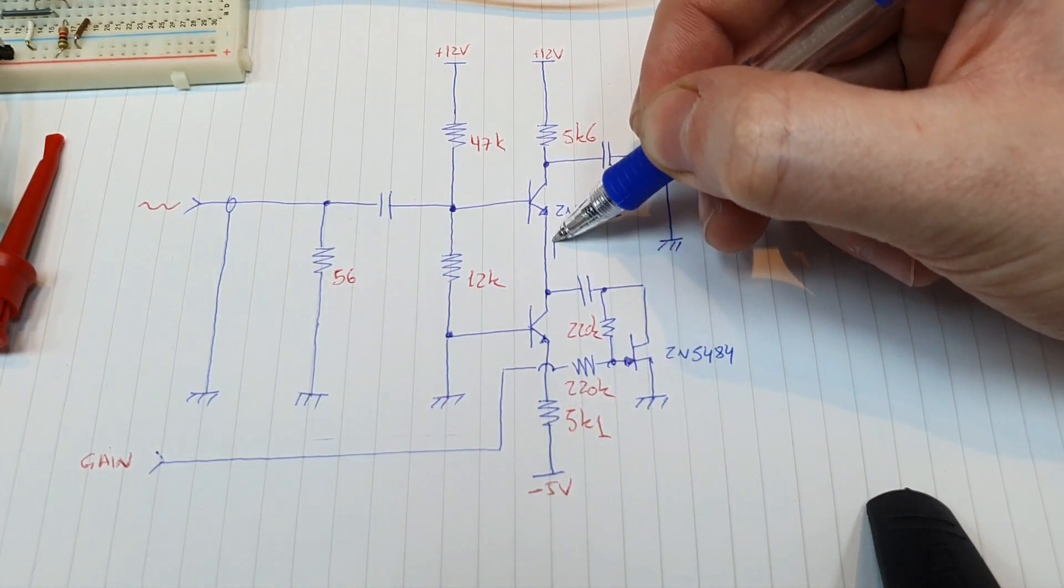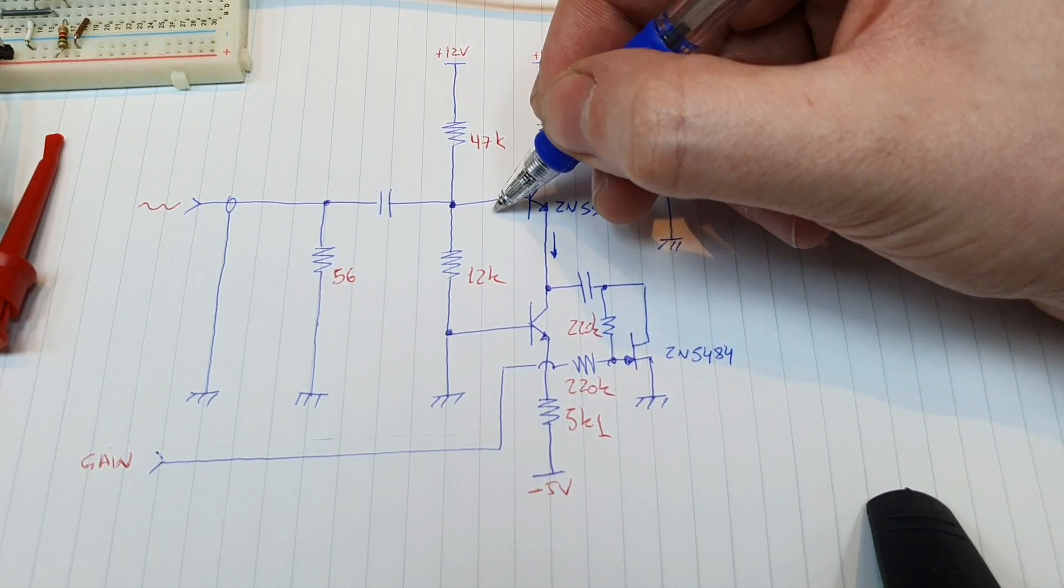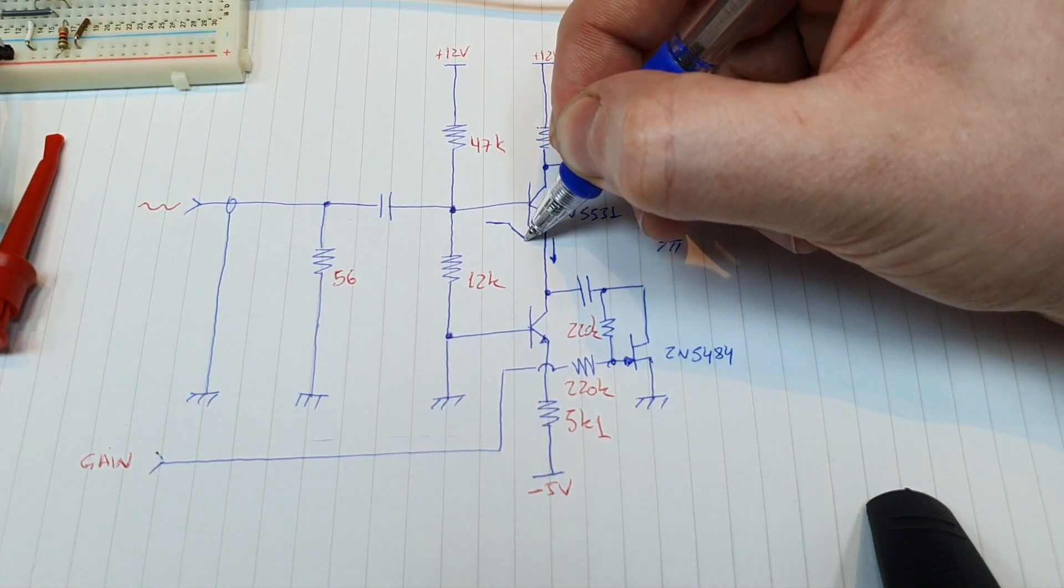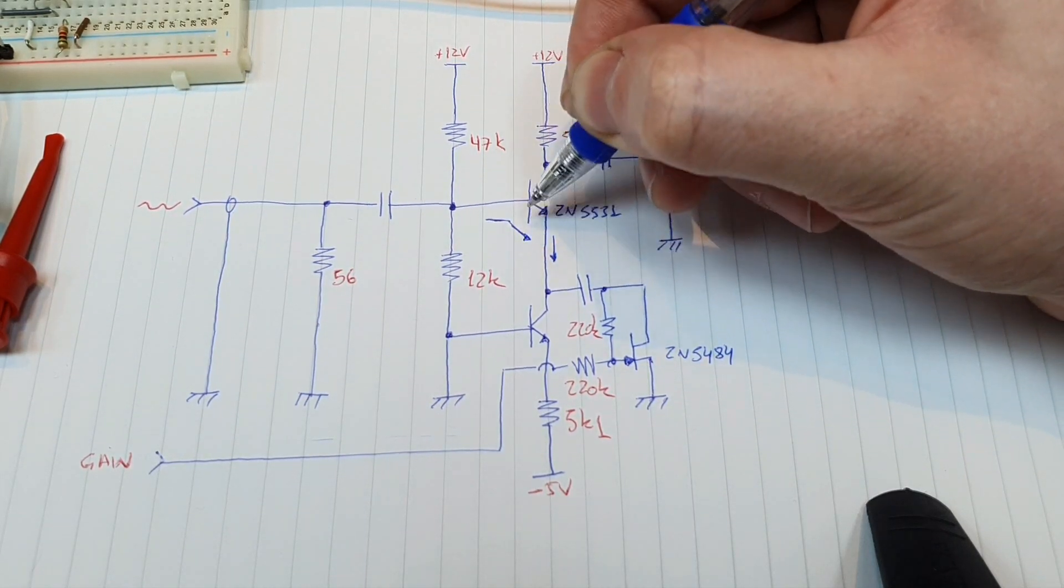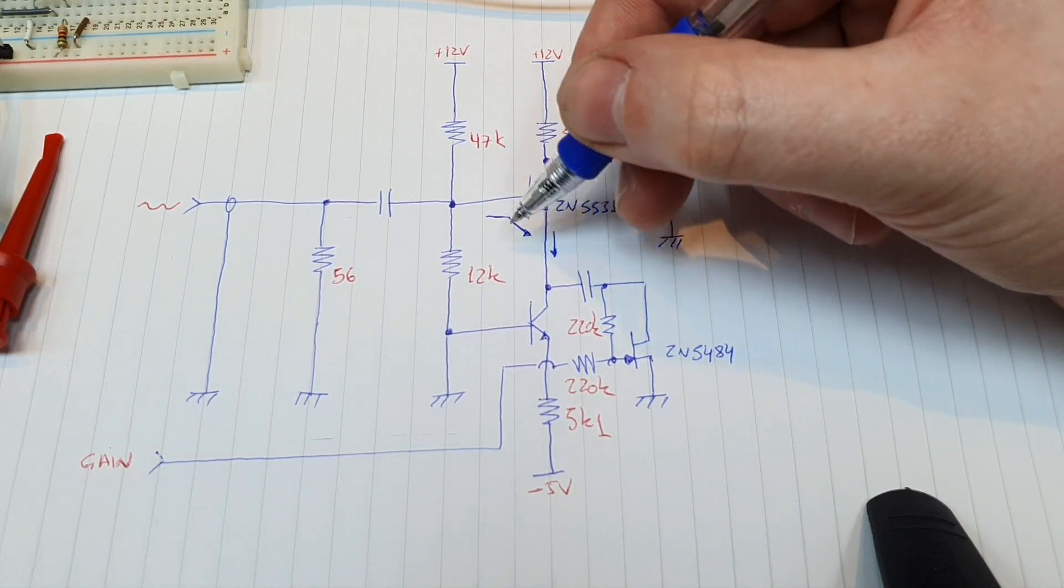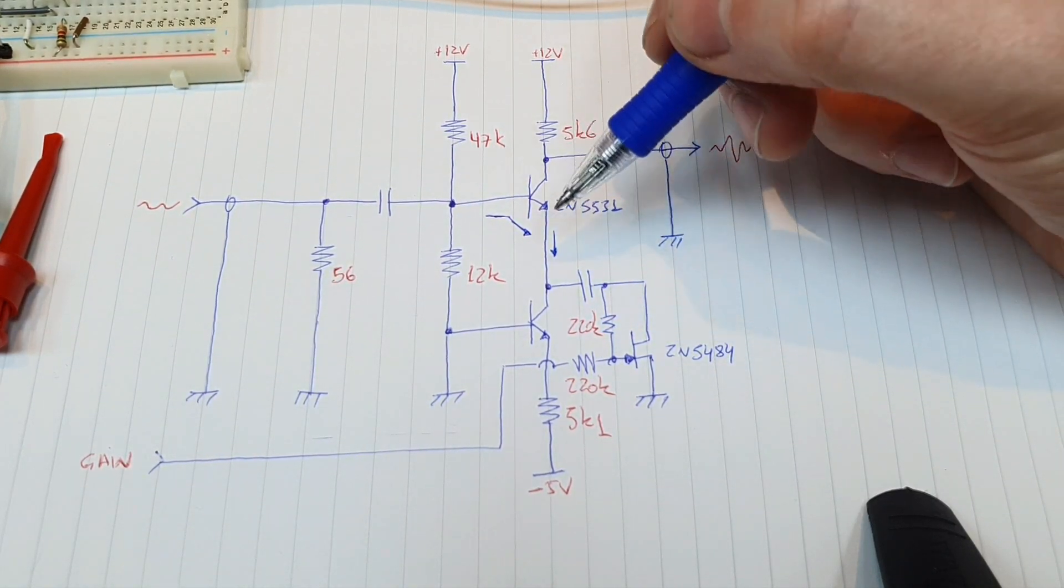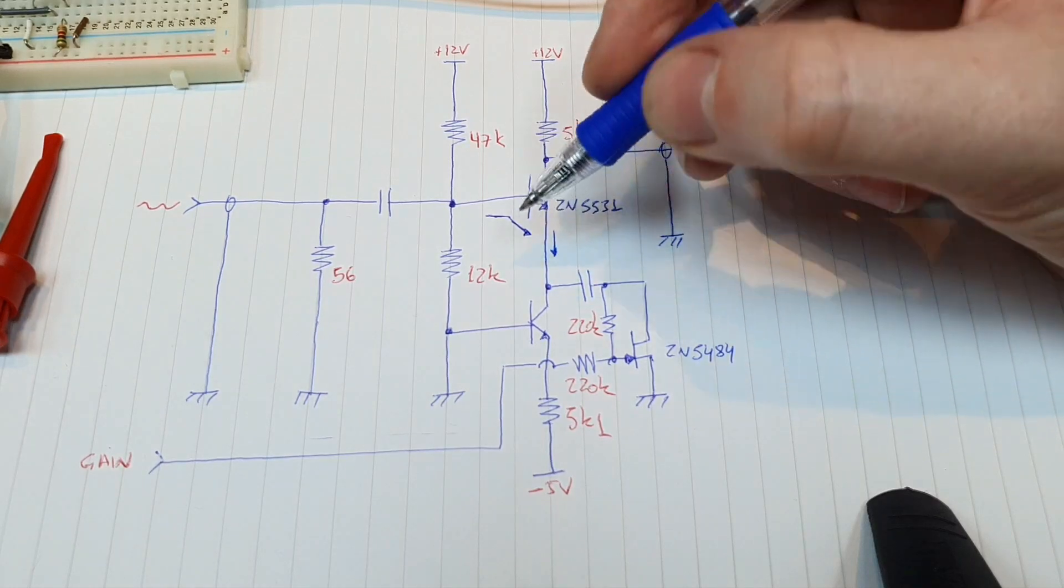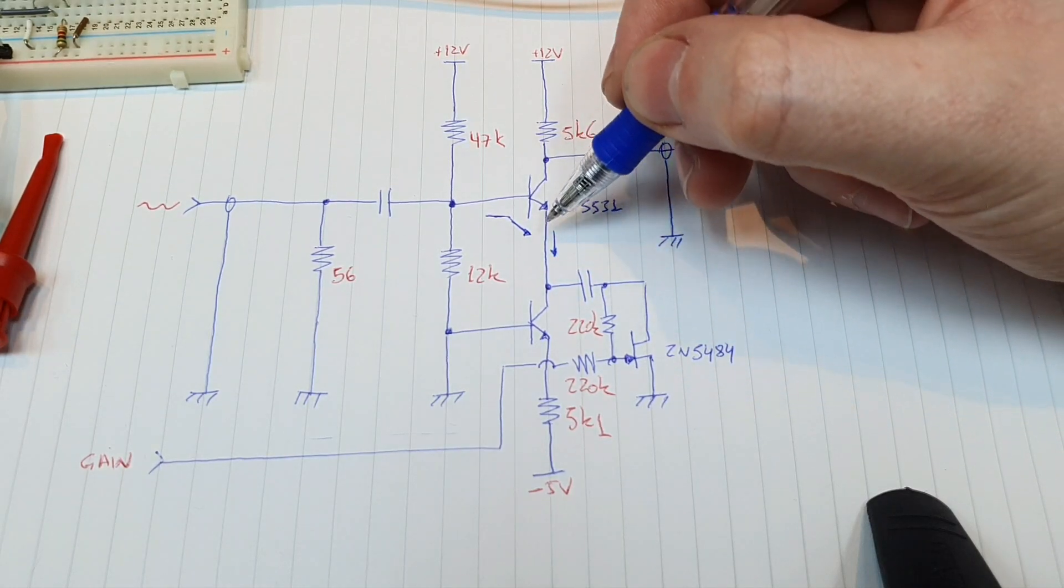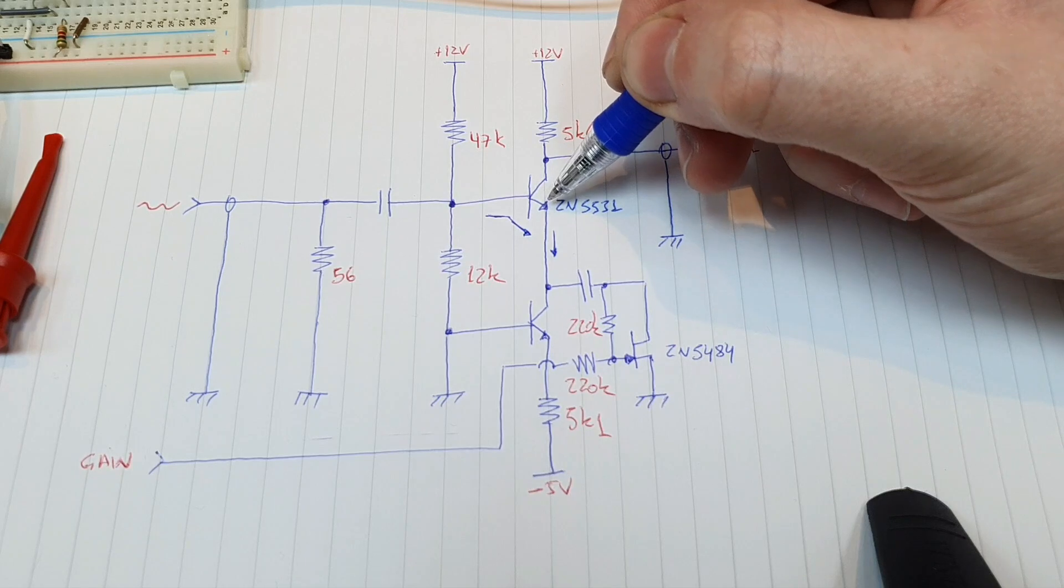So here we have a constant current and the signal on the input sees a very large AC resistance. So the gain of this amplifier is almost zero. To change the gain we can change the AC resistance seen here on the emitter of the amplifier.